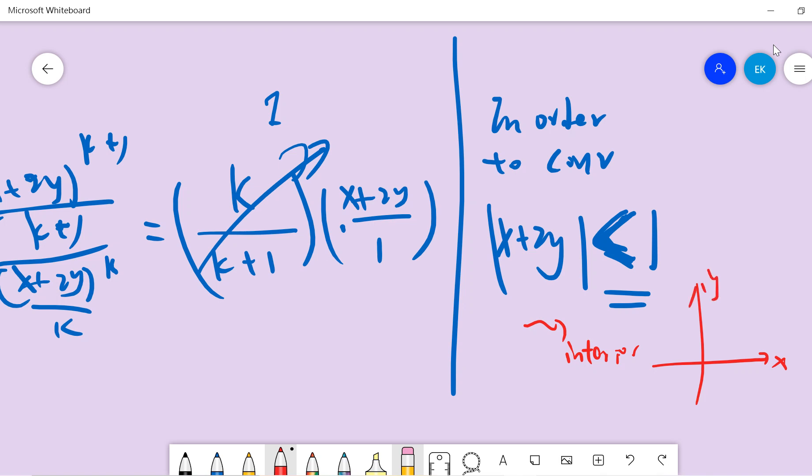And when x+2y is 1, it means that this is 1, this is 0.5, and then this is minus 1. So this is the region which is convergent.